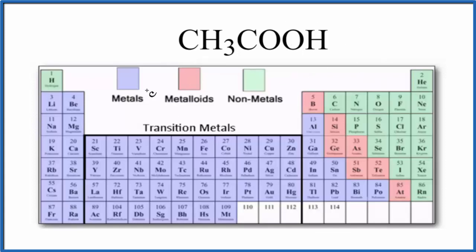So if we look at the periodic table here, broken up into metals, metalloids, and nonmetals, we'll find carbon. Then over here we have hydrogen and oxygen, and all of these are nonmetals.